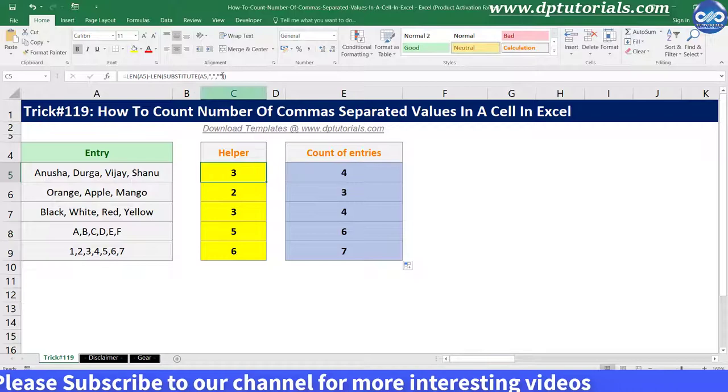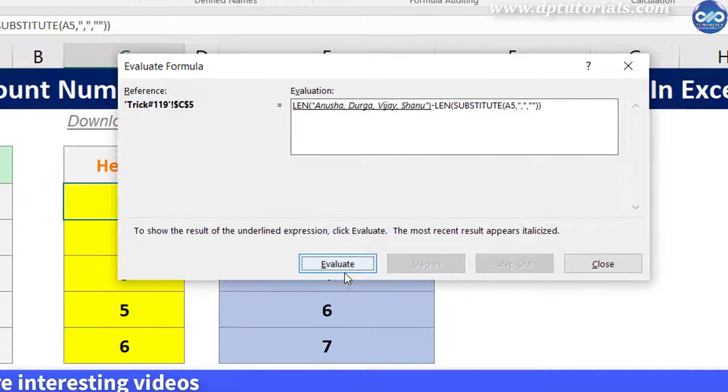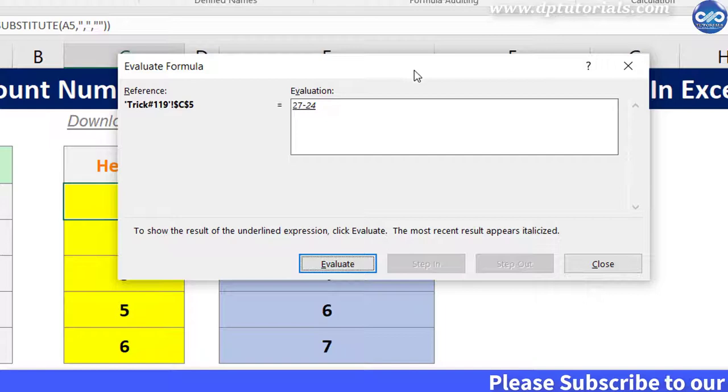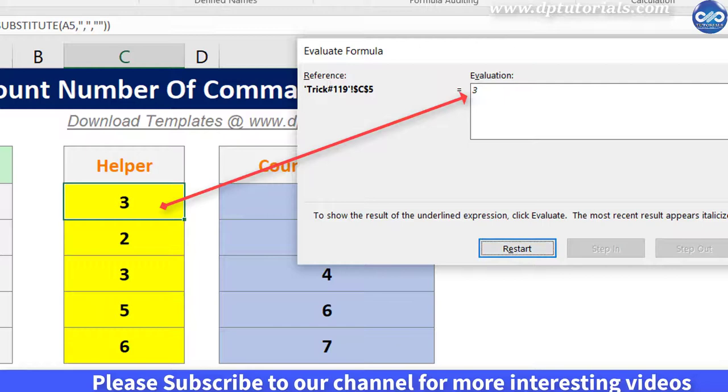LEN A5 gives the number of characters in the cell 27. In the second part of formula, we are removing commas using the substitute function and then counting the number of characters using the LEN function which is coming as 24. So 27 minus 24 is 3 which is nothing but the number of commas in the cell A5.